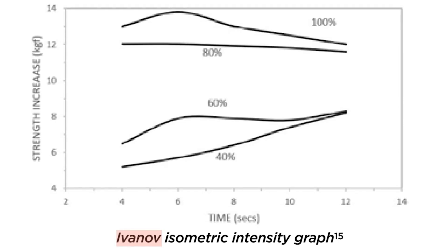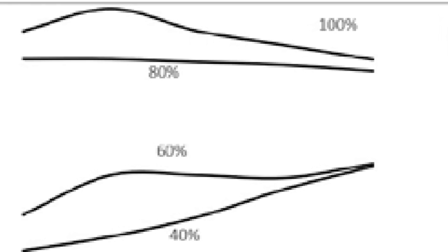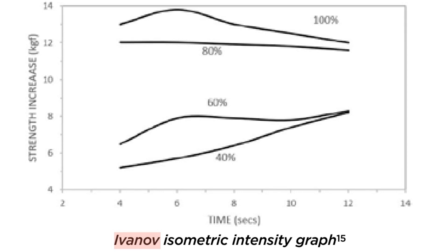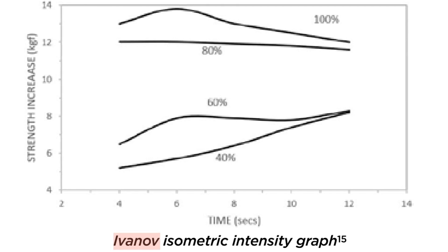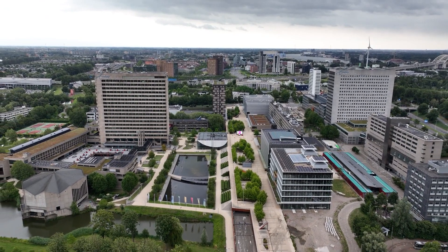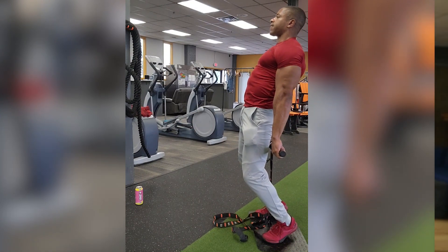One of the reasons this made sense when I read it is the Ivanov isometric intensity graph. The different curved lines on the graph represent different intensities of tension: 40%, 60%, 80%, and maximal 100% tension. Strength increase as a result of those efforts is represented on the vertical axis. Strength increases occur even at 40% tension, however the higher the degree of tension the better the strength gain. Maximum tension — pushing or pulling against the handle as hard as possible — gives the best results. This is further backed by the Cow and Herbert optimization of isometric strength training intensity research study. The harder we push or pull, the better the strength gains.